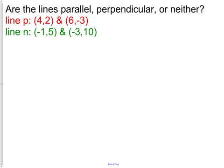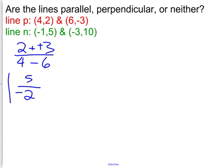Let us start with line P. We will do two minus negative three over four minus six. That gives us five over negative two. We have our first slope.